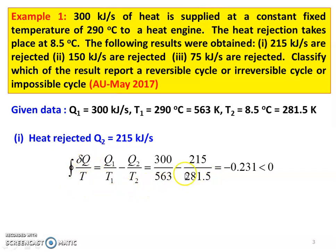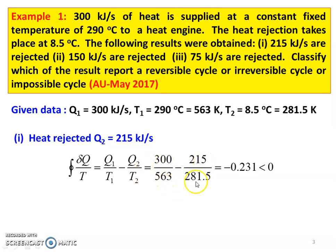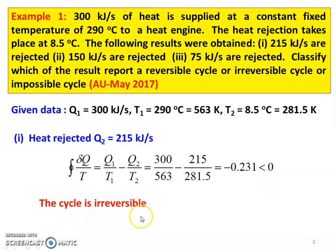Clausius theorem states: cyclic integral of δQ/T equals 0 for a reversible cycle. For subdivision 1, Q1/T1 minus Q2/T2 equals 300/563 minus 215/281.5, which equals minus 0.231. Since this is less than 0, the cycle is irreversible. When the cyclic integral of δQ/T is less than 0, the cycle is irreversible.